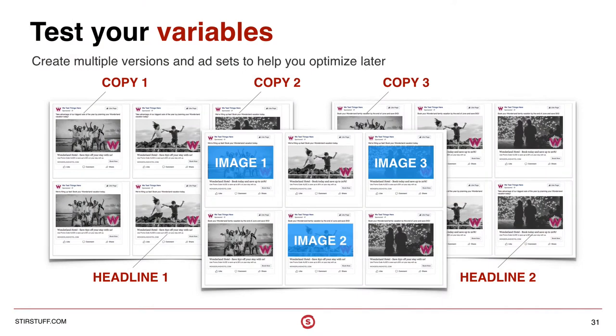Getting into testing your variables: for each campaign we like to have a set number of variables. For the Wonderland example, we're testing three to four images, three different versions of copy, and two different headlines against one another. This actually results in 18 different versions of the ad so we can determine exactly the right combination that's going to get those reservations through. It's a little more framework upfront, but it pays out because you'll understand after the campaign which image people like and which copy people like. That can help influence additional social campaigns, digital campaigns, and potentially even language on your website.